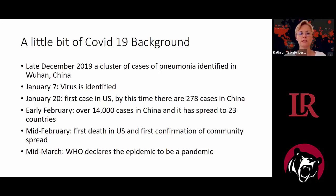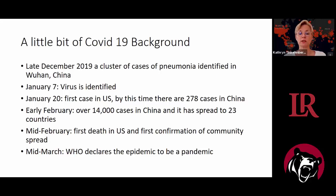On January 20th, the first case appeared in the US, at which point China had 278 cases and was considering they had an epidemic. By early February — a span of just two weeks — China went from 278 cases to over 14,000, and the disease had spread to 23 countries. By mid-February, we had the first death in the US and the first confirmation of community spread. It wasn't until mid-March that the World Health Organization declared it a pandemic, because of the gravity that word carries.